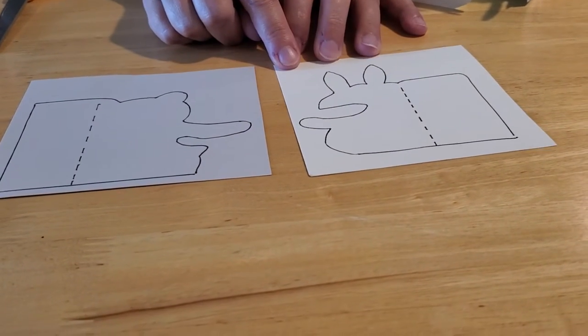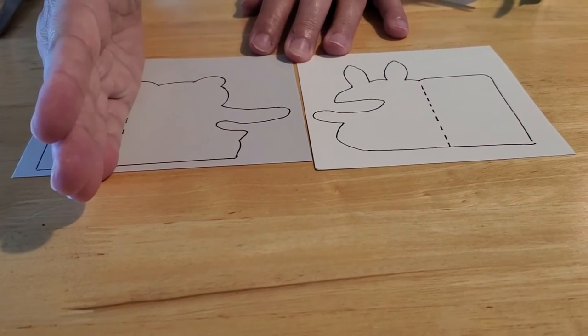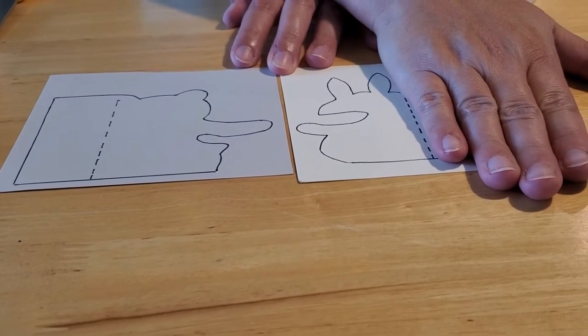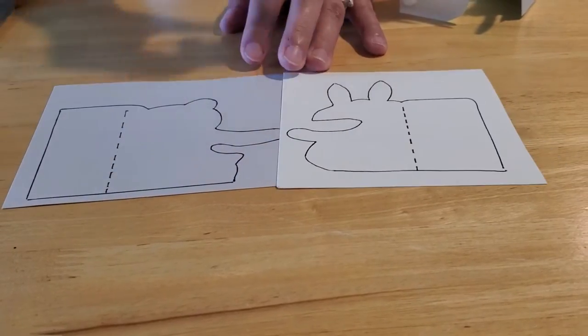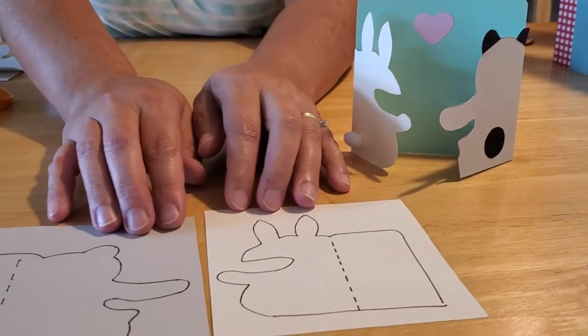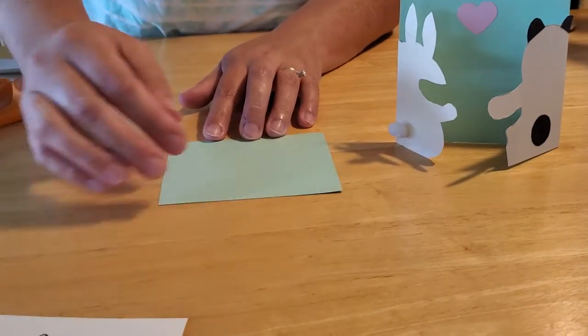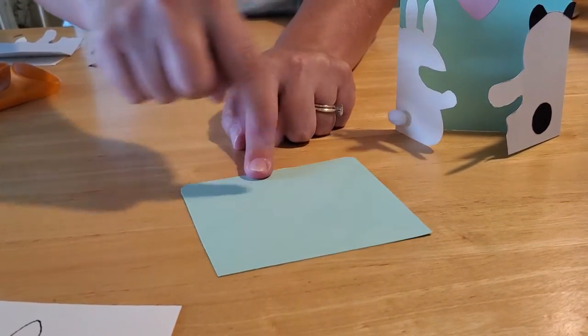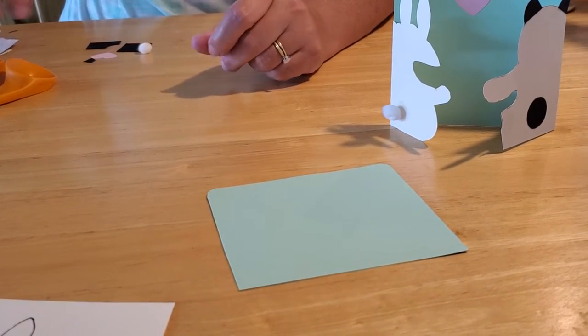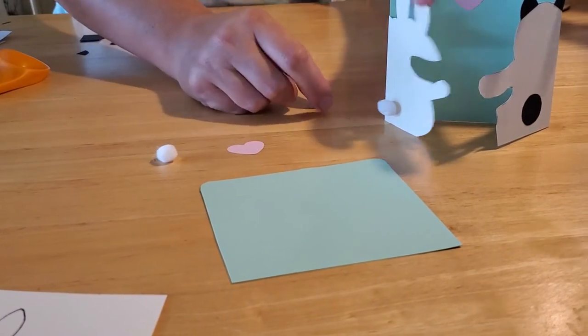You're just going to need two different colors of cardstock. We found a light gray colored cardstock for the bear and an off-white cream colored cardstock for the bunny. And you're just going to want to trace almost three quarters of a bear's outline on one, and three quarters of an outline of a bunny on the other, leaving room for the arms to intersect when you put them together. There is a pattern for this on the internet as well.